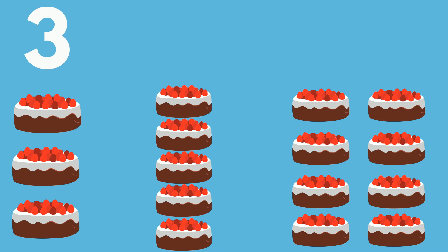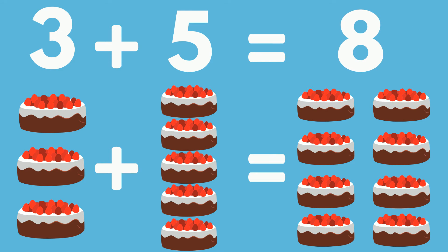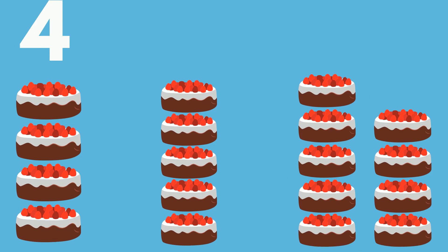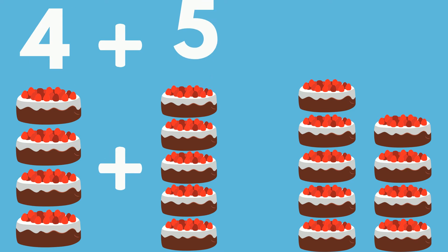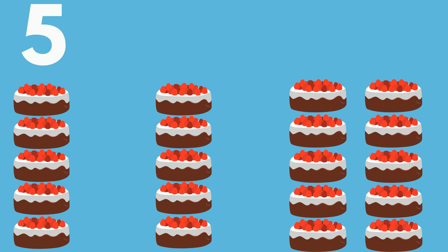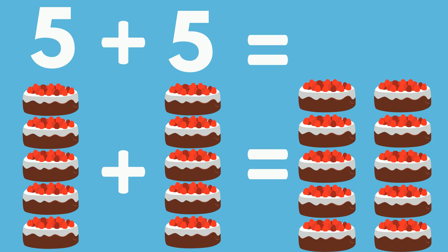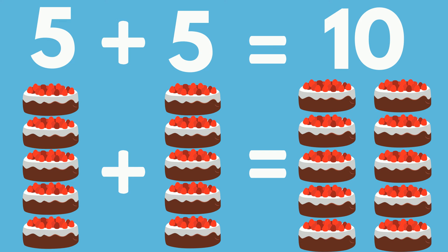3 cakes plus 5 cakes equals 8 cakes. 4 cakes plus 5 cakes equals 9 cakes. 5 cakes plus 5 cakes equals 10 cakes.